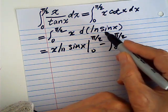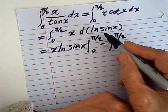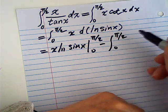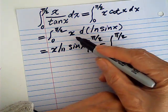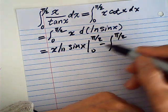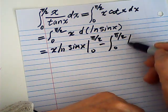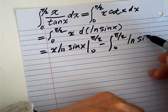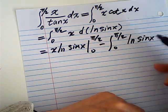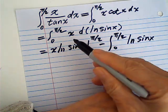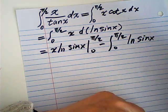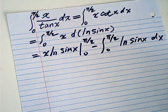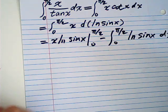So v is log(sin x) and u is x, and the opposite is dx.